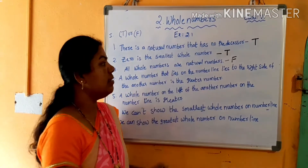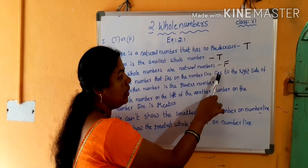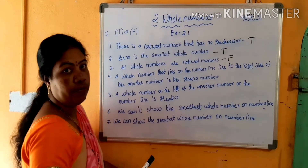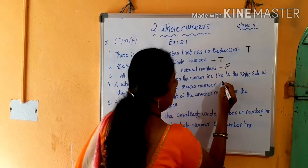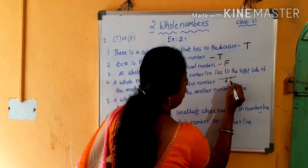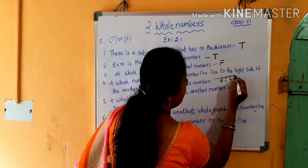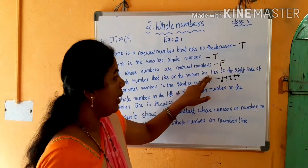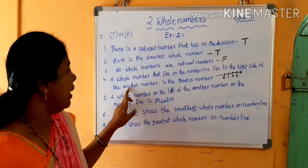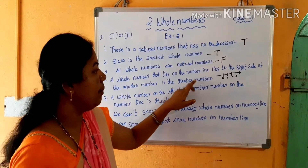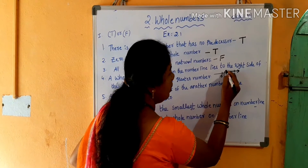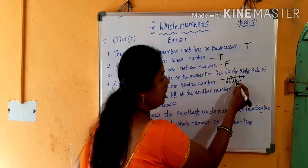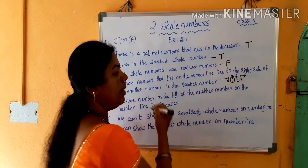A whole number that lies on the number line to the right side of another number is the greater number. For example, if you take 1, the right side of 1 is 2, and 2 is greater. So this statement is true.